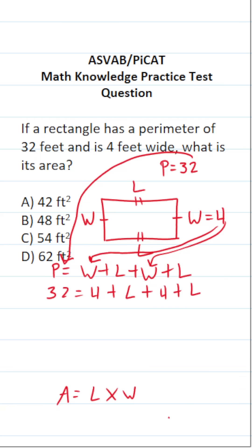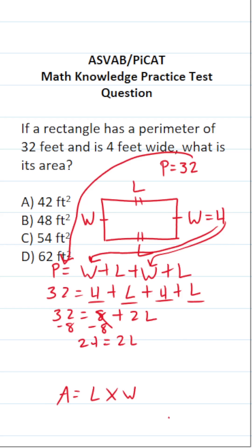Let's simplify this. 4 and 4 is 8, and L and L is going to be 2L. If we subtract 8 from both sides, that crosses out, leaving us with 2L. 32 minus 8 is 24. Finally, we solve for L by dividing both sides by 2. That gives us L equals 24 divided by 2, which is 12.